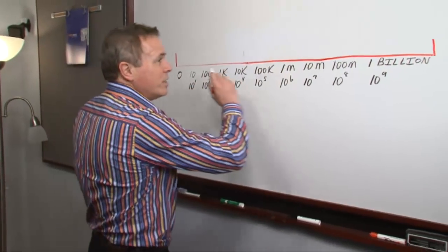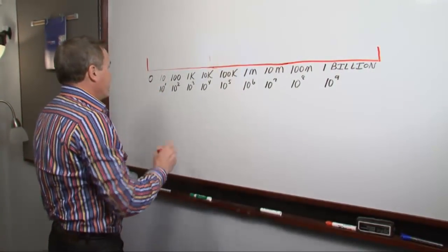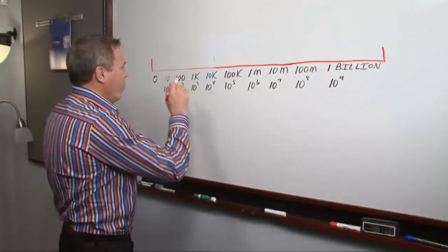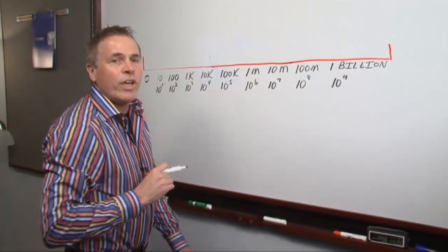What I've done here is I've drawn a simple line chart starting at zero and going up to a billion, and what I'm going to be plotting here, what we call ohms.